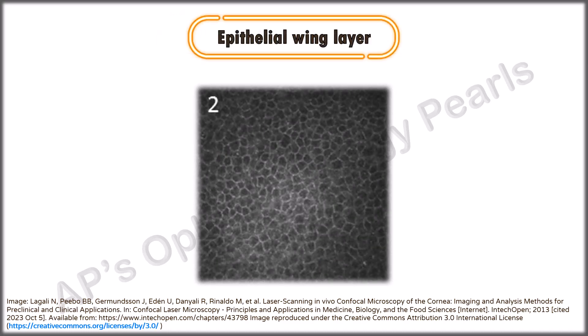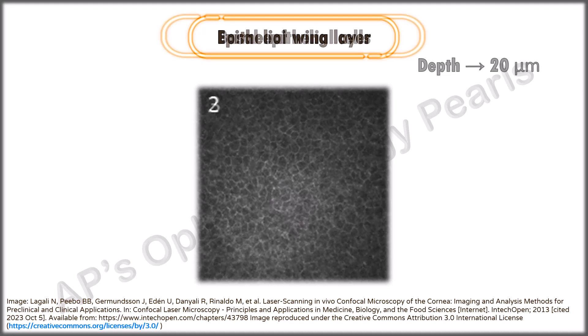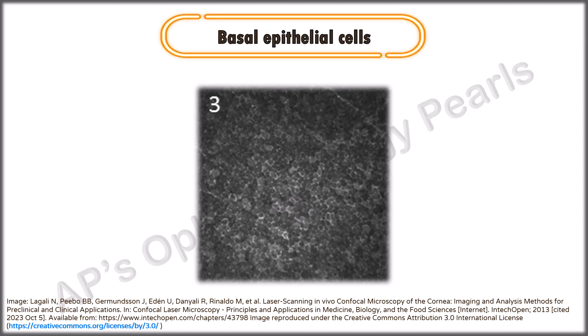The wing cells are a little deeper, have bright cell borders and bright nuclei with no dark surrounding halo. Still deeper are the basal epithelial cells which appear dark with light intercellular borders. These borders become more pronounced in corneal edema.